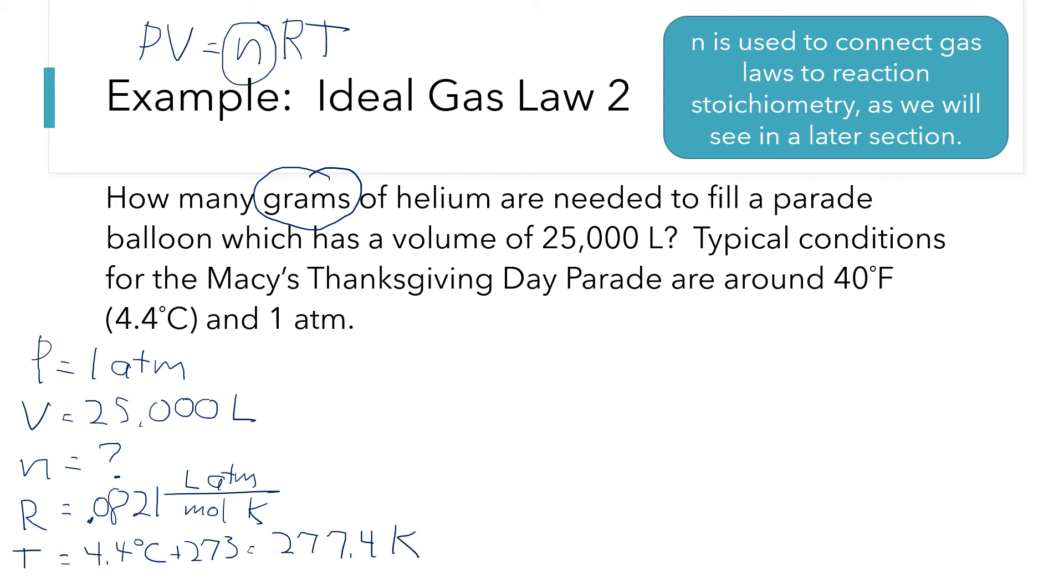All right. So to solve this equation for n, I need to divide both sides by R and T. So that's going to give me PV over RT.